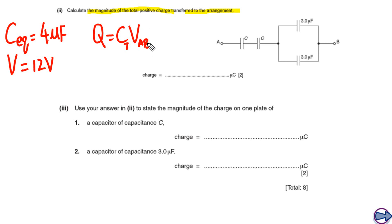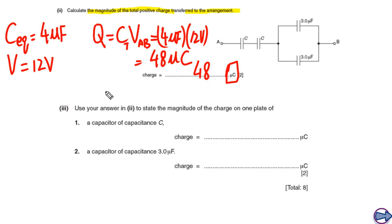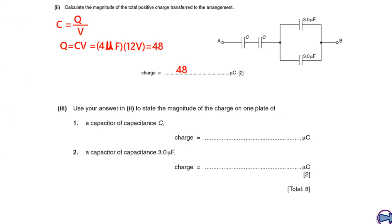We calculate Q using Q equals CV. With C-total equal to four microfarads and potential difference equal to 12 volts, multiplying gives a final answer of 48 microcoulombs. Note that the unit is microcoulombs — it can be tricky, so always keep an eye on units.